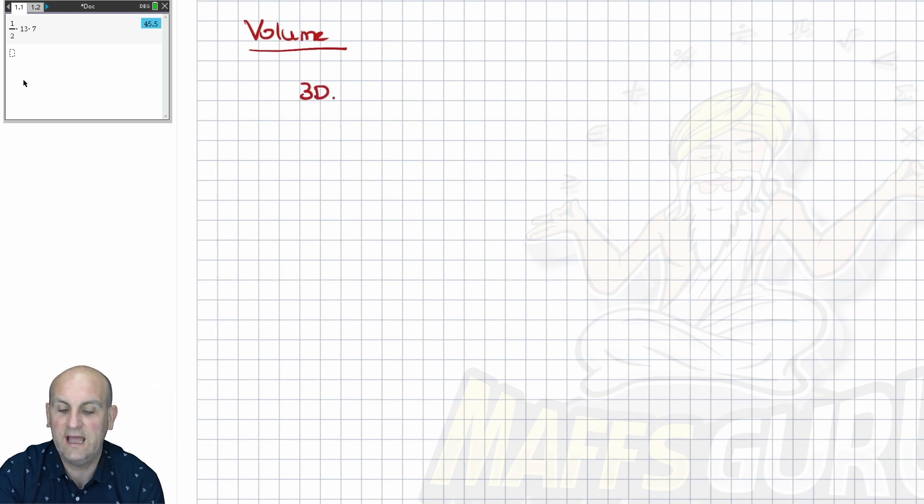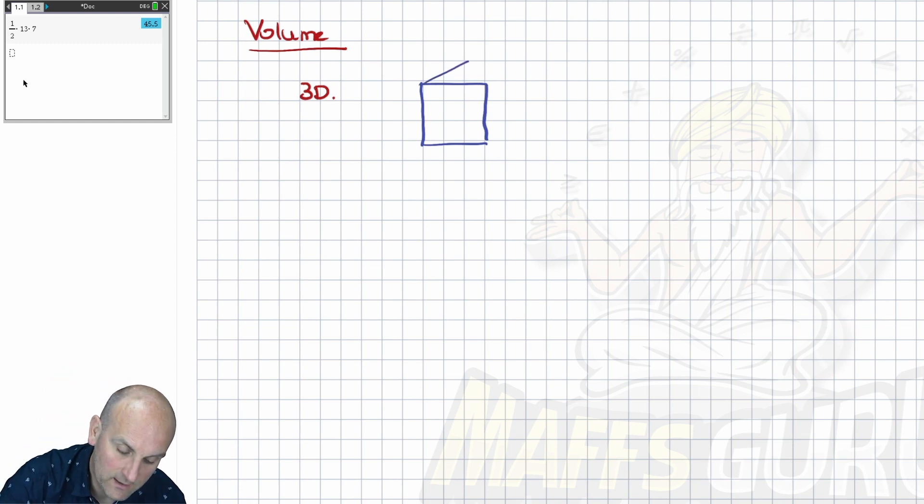Volume, on the other hand, deals with three-dimensional shapes. So our shape has to be 3D. And a lot of people turn around and say, I hate drawing 3D shapes. Let me show how to draw a 3D cube. Always draw the front face first. So all I've done is I've drawn a square. And then I'm just going to extend my lines back.